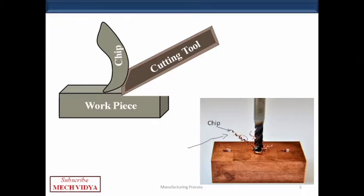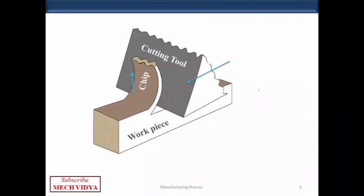To help you visualize this cutting process, I have shown a three-dimensional view of the setup where a single point cutting tool is removing metal pieces from the workpiece in the form of chips. The direction of the cutting tool and the chip flow are shown with blue colored arrows.